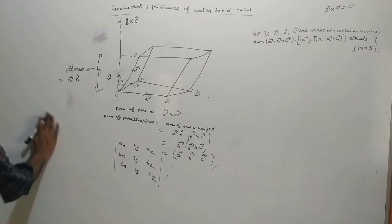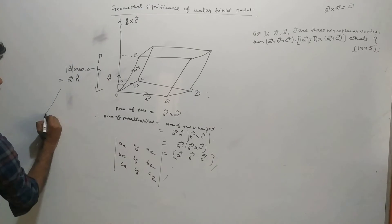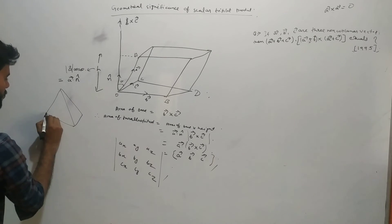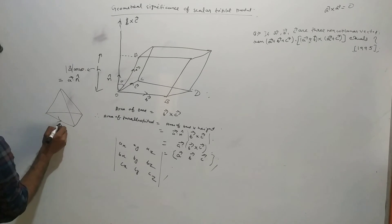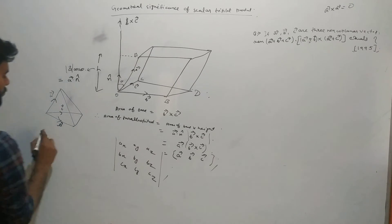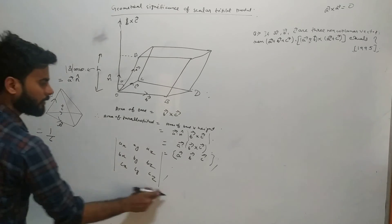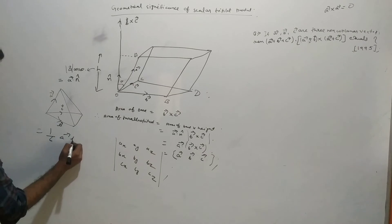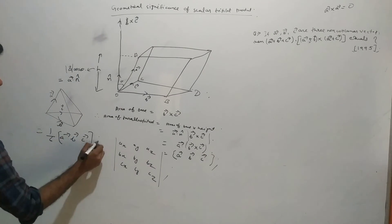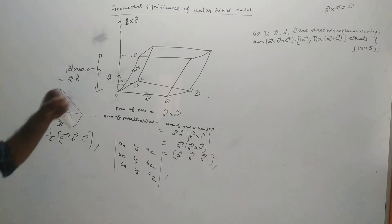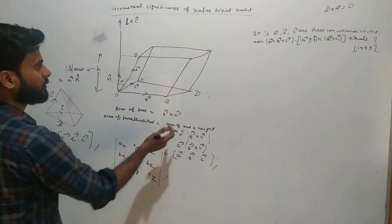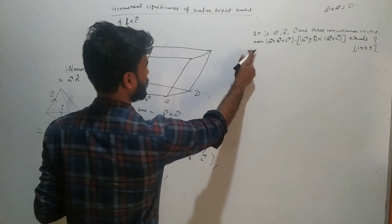There is also a direct result for the tetrahedron. We can draw the tetrahedron like this, whose three coterminous edges are b, c, and a. So its volume will be 1/6 of the scalar triple product [a, b, c]. Based on this theory and the previous video, we will do some questions in the next video.